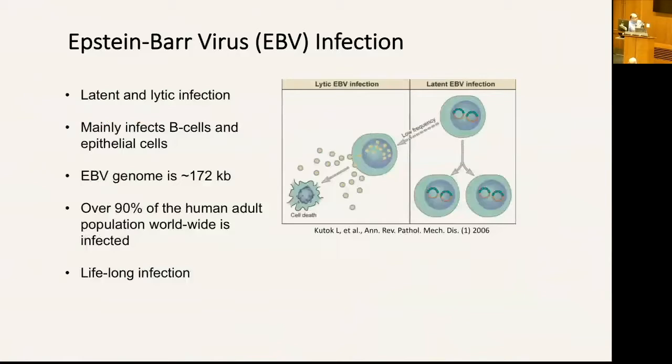EBV infects basically epithelial cells and B cells. These herpes viruses are large compared to other viruses — in EBV it's about 172 kilobase pairs. More than 90% of the adult human population is infected with EBV.